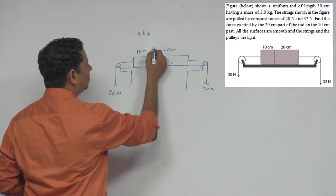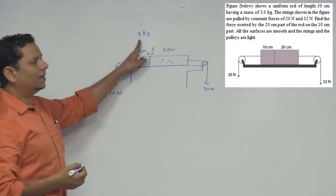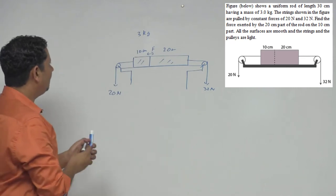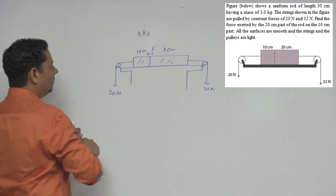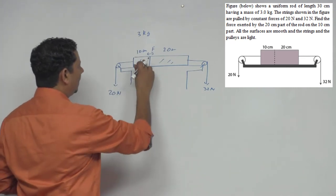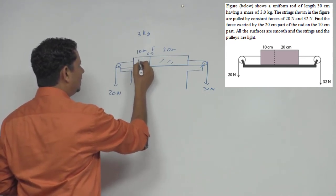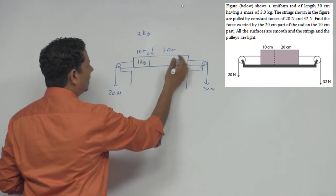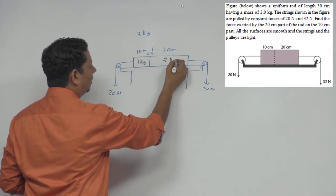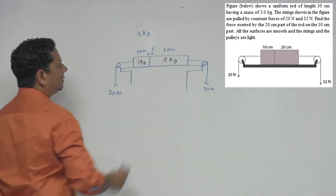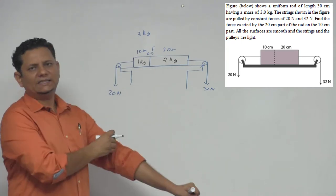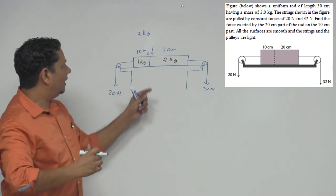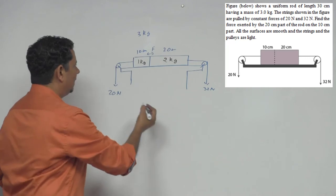The total mass is 3 kg and the rod is divided in a 1:2 ratio. So the mass of the 10 cm part becomes 1 kg and the mass of the 20 cm part becomes 2 kg — since the 20 cm part has double the length, it has double the mass.